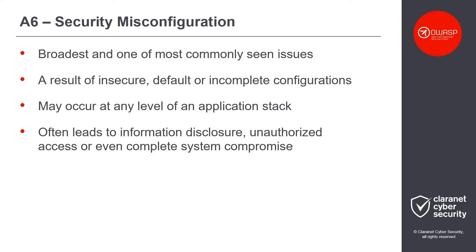Security Misconfiguration is one of the broadest and most commonly seen issues. This typically is a result of insecure, default, or incomplete system configurations. Security Misconfigurations can happen at any level of an application stack, including the network services, the web server, application server, database, frameworks, custom code, and even pre-installed virtual machines, containers, or storage. They are usually easily exploited and lead not only to information disclosure, but also quite often result in unauthorized access or even complete system compromise.